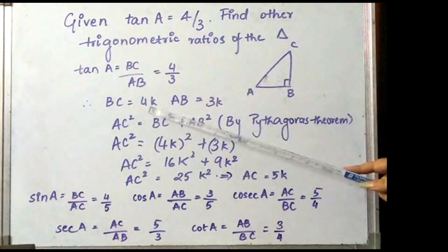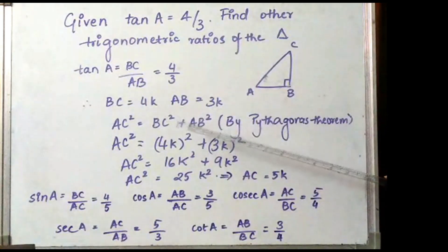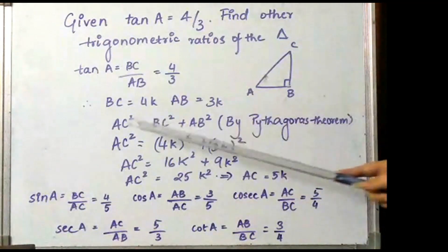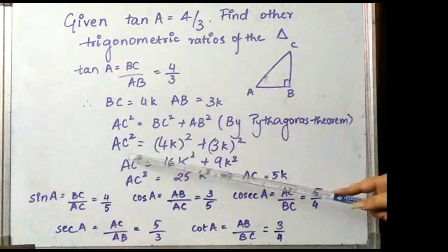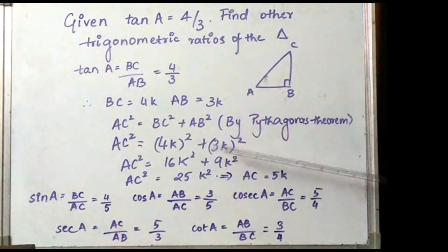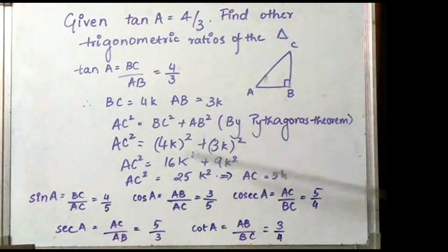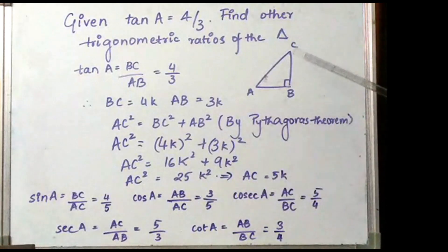We take BC as 4k and AB as 3k, where k is any positive integer. Now by Pythagoras theorem, the sum of the squares of these sides is equal to the square of the hypotenuse. So AC² = BC² + AB² = (4k)² + (3k)² = 16k² + 9k² = 25k². Therefore AC is 5k, since this is a distance and the negative root is ignored.